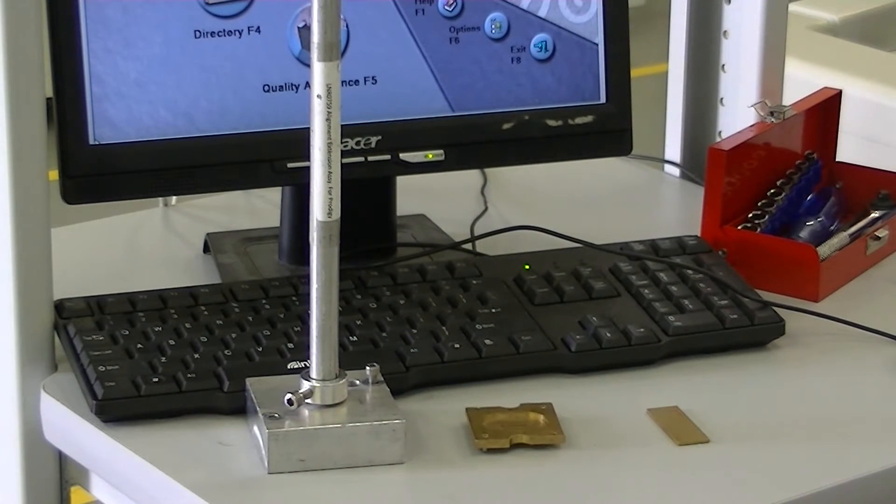This video will explain how to calibrate your Prodigy machine. Tools you'll need include a peaking brass, alignment plate, aperture, and alignment rod.